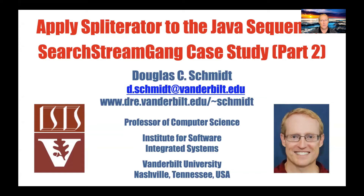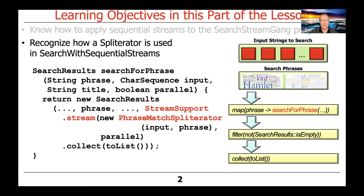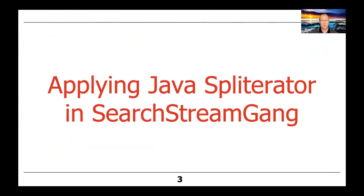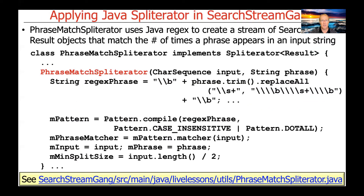Now that I gave you an overview of the Java sequential search stream gang Spliterator and how it was used at a high level and what its fields meant, let's go ahead and take a look at the implementation of its two key methods. For the purposes of sequential stream, here is the constructor for the PhraseMatchSpliterator.